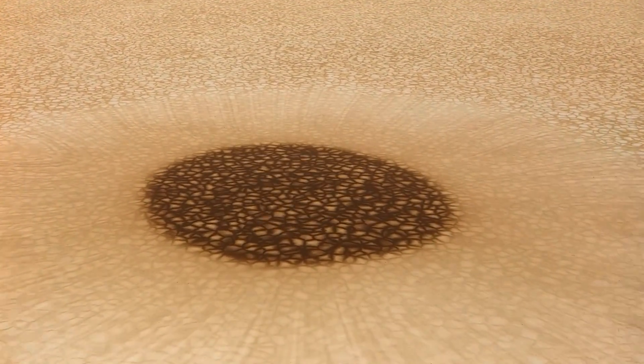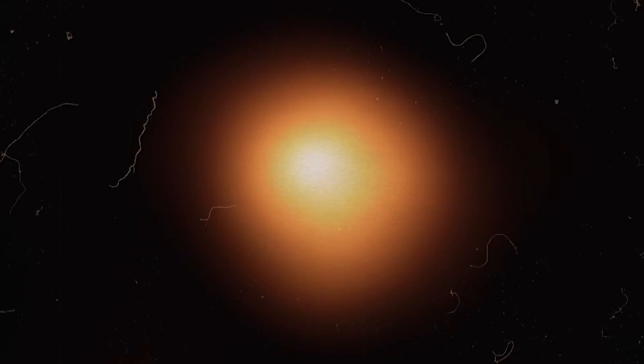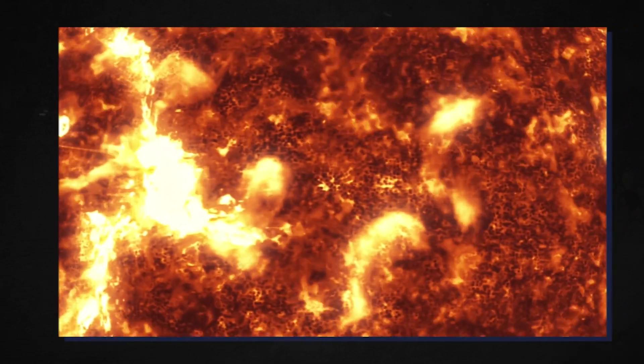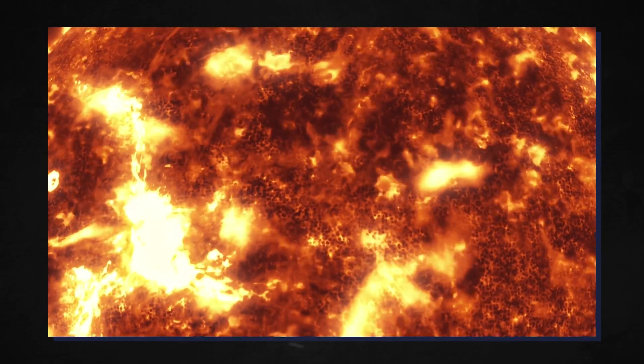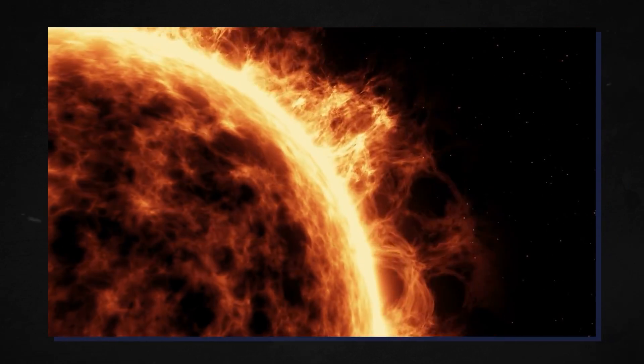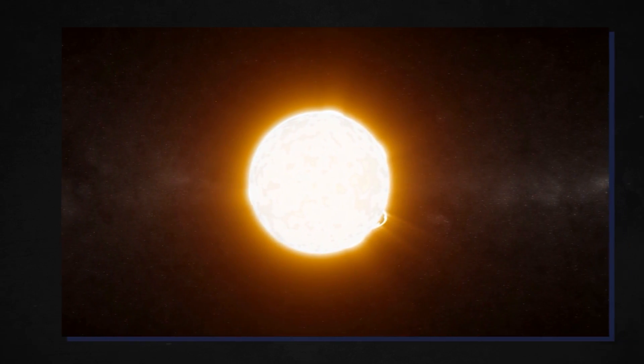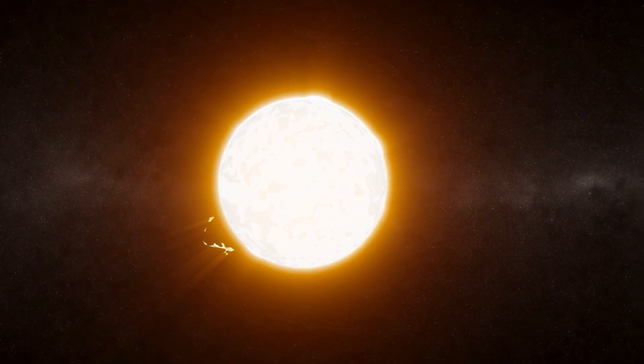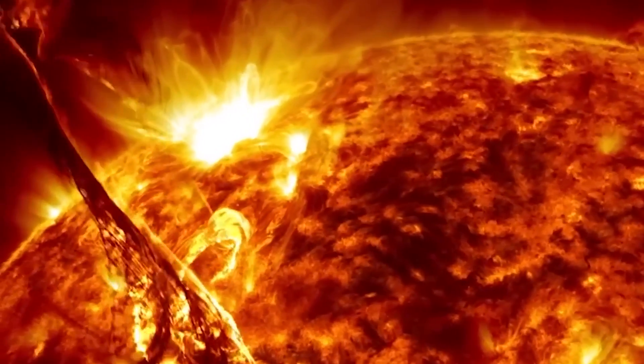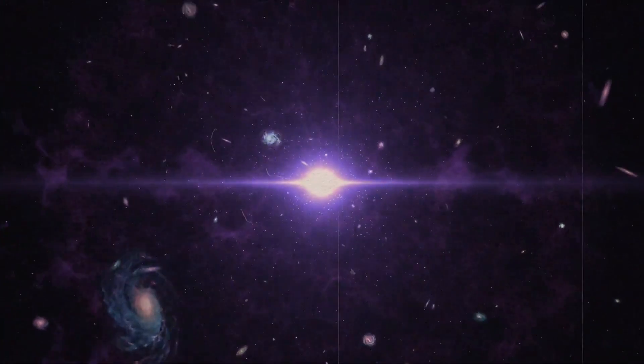Betelgeuse will unleash an unimaginable burst of energy during this cosmic spectacle, shining with an intensity far beyond its previous brilliance. It could become as luminous as a full moon, radiating its astonishing glow across the sky. The supernova's radiant light will be so powerful that it might even be visible during daylight, turning our ordinary days into extraordinary visual experiences. However, when exactly this extraordinary event will occur remains a mystery. While it's unlikely to happen within our lifetimes, the precise timing is unknown. It could surprise us today, or it might be delayed for millions of years, adding an element of unpredictability and suspense to the enigmatic nature of the supergiant star.